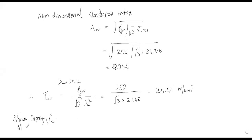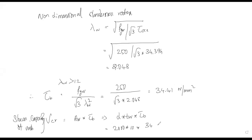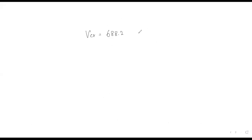The shear capacity Vcr equals the area of web multiplied by tau_b. The web depth is 2000 mm and thickness is 10 mm, so area of web times tau_b of 34.41 gives Vcr equal to 688.2 kN.